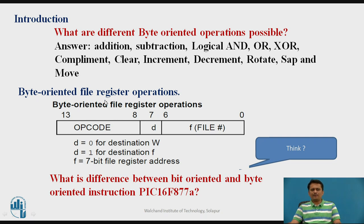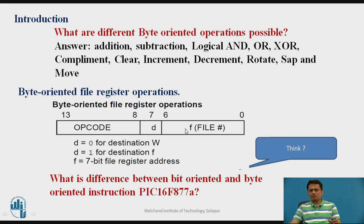When talking about byte-oriented operations, the opcode will specify two things: the file register to deal with, and D, the destination bit. If D equals 0, the result goes to the working register. If D equals 1, the destination is the file register. The file register address is 7 bits, and 2 additional bits come from the bank selection, giving a total 9-bit data memory address.